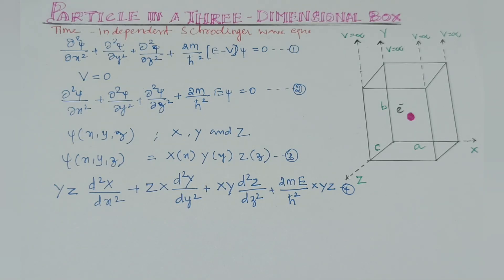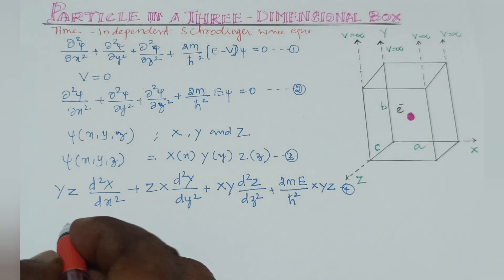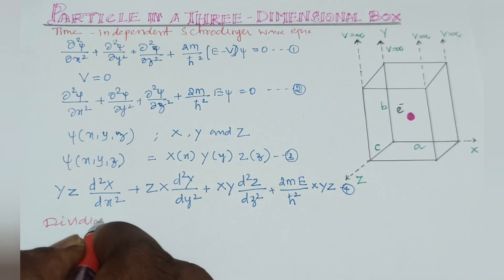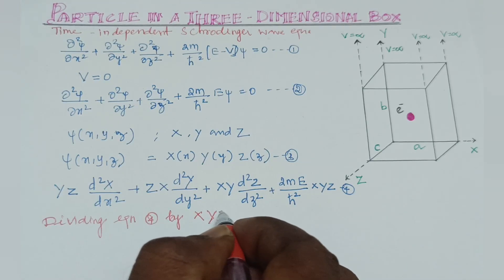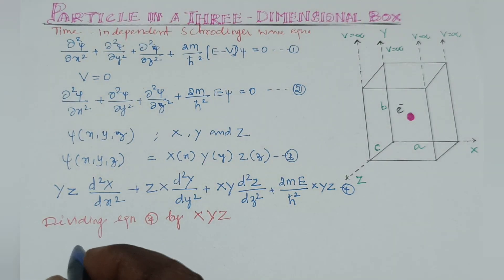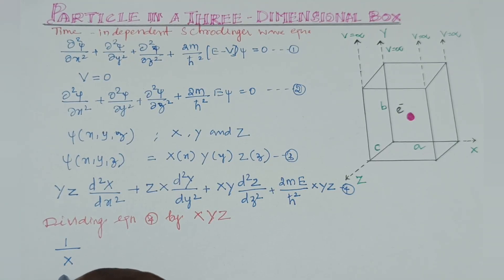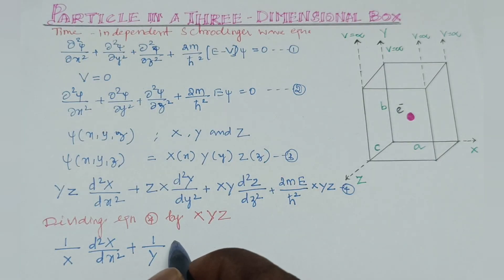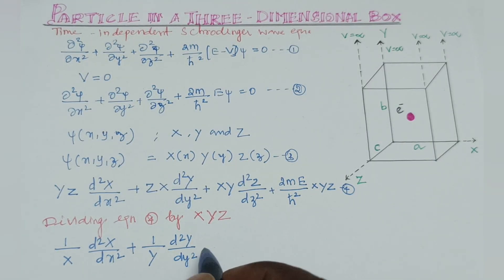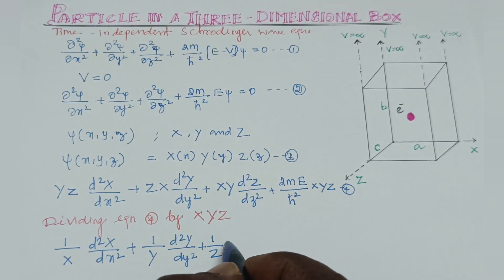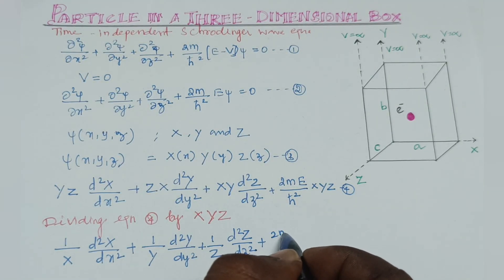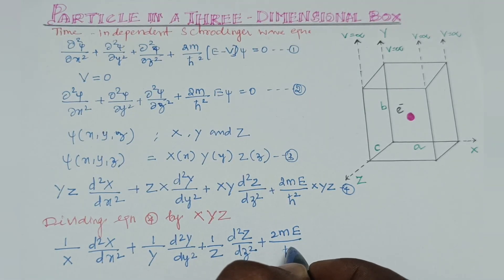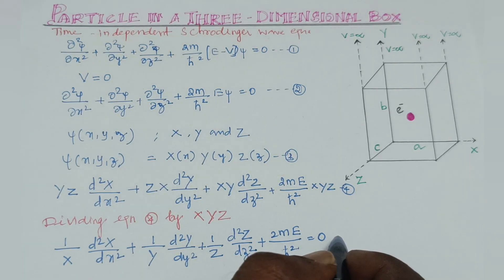Now dividing equation 4 by X·Y·Z, we get: (1/X)(d²X/dx²) + (1/Y)(d²Y/dy²) + (1/Z)(d²Z/dz²) + 2mE/ℏ² = 0. This is equation number 5.